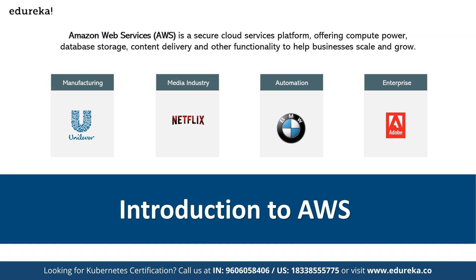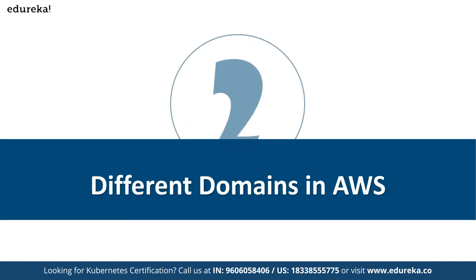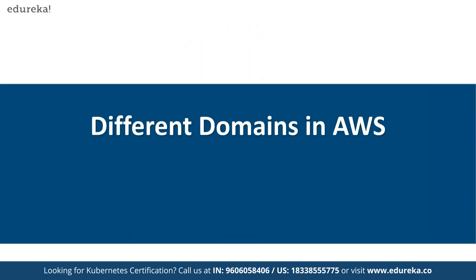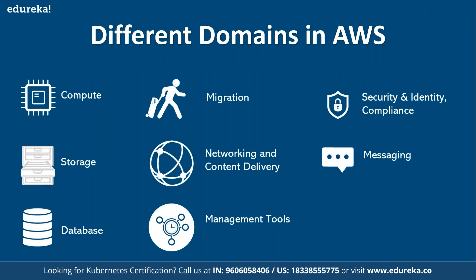AWS is a strong market leader offering around 175-plus different services across various lines of business, including blockchain technology, satellite technology, robotics, AR/VR, automation, development platforms, and network security. The different domains in AWS include compute, storage, database, migration, network and content delivery, management tools, security, identity and compliance, and messaging services.